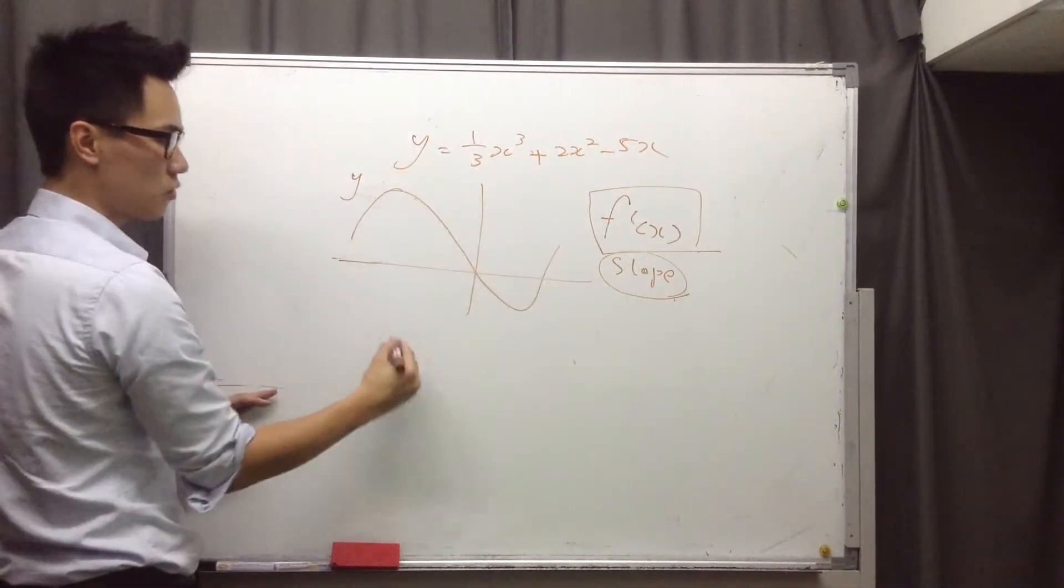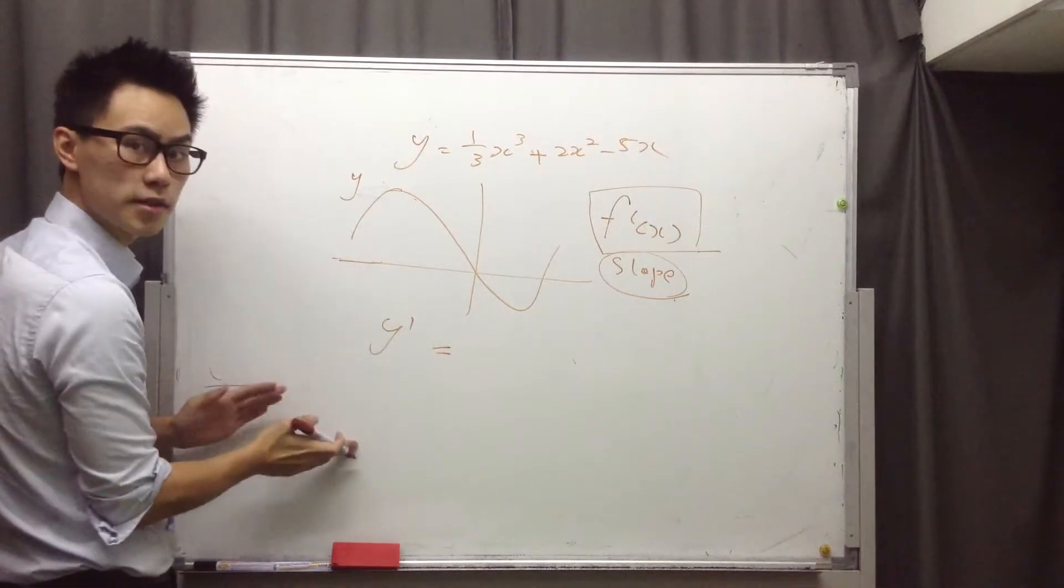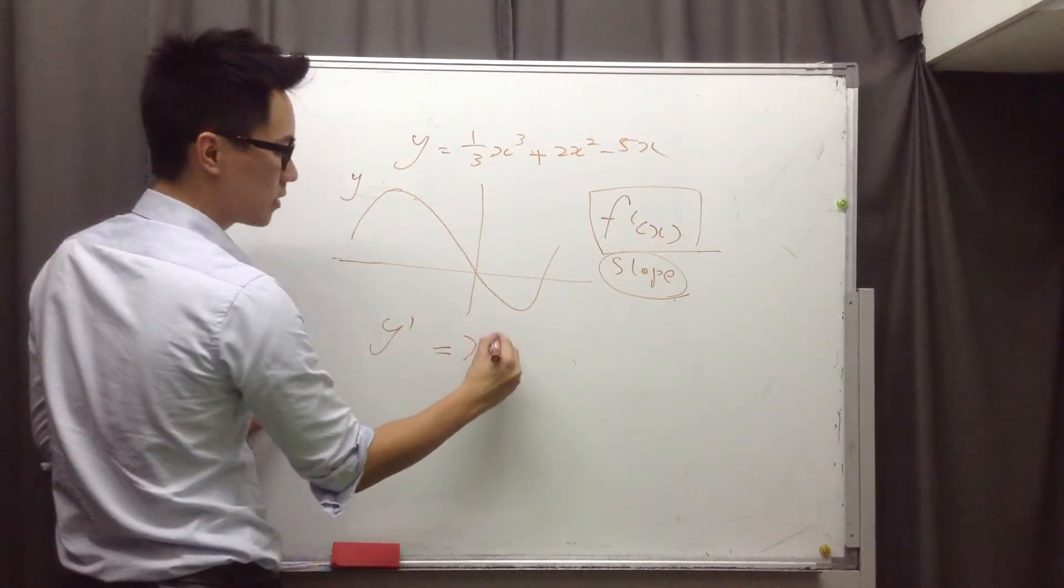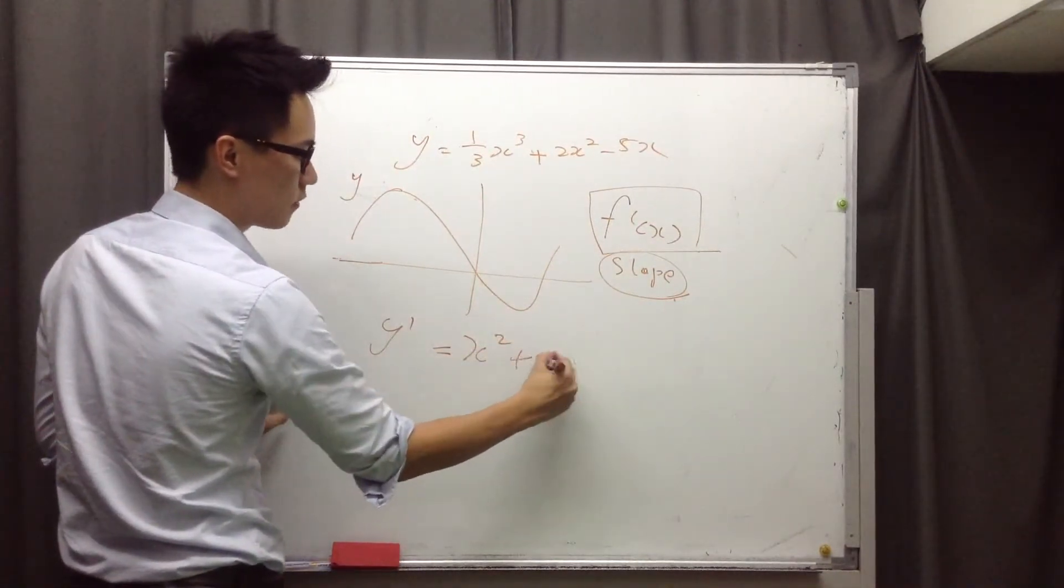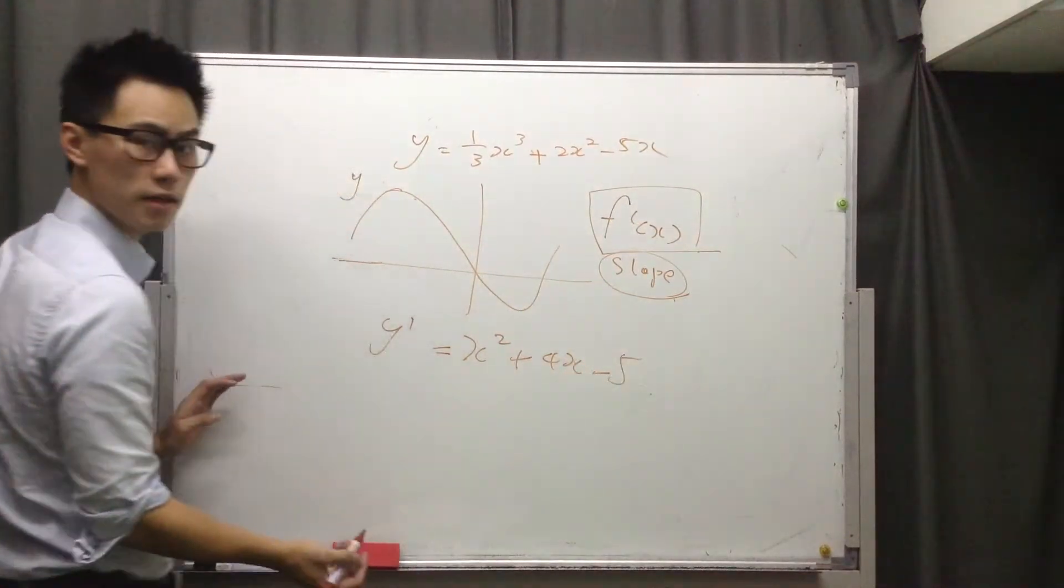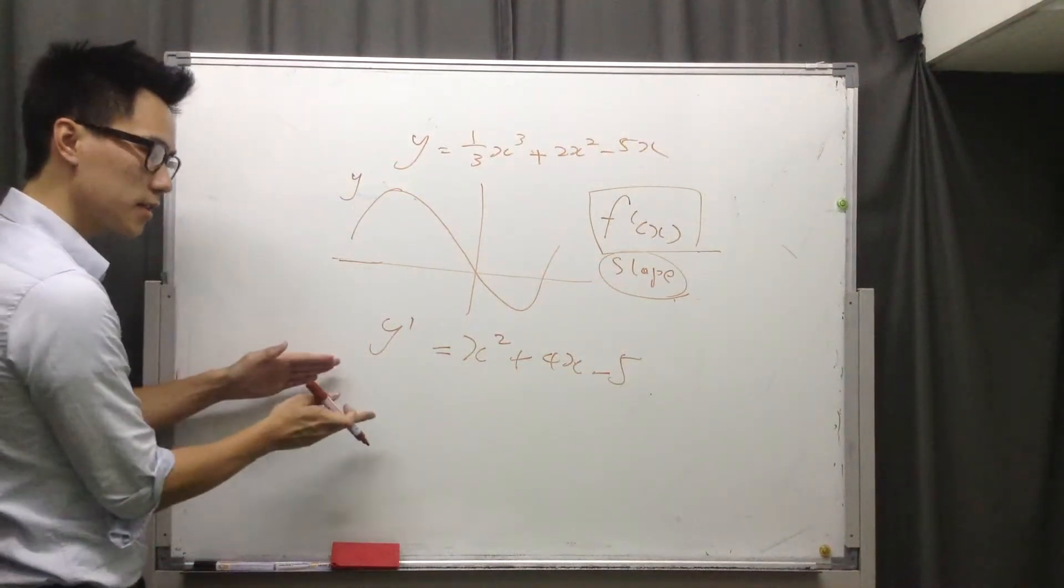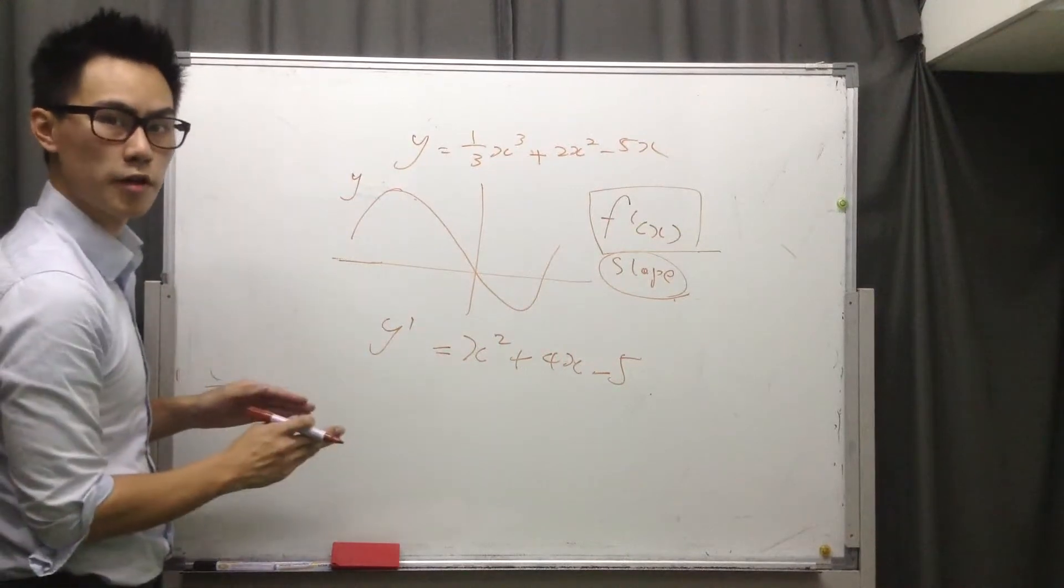So differentiation on this one, y dash would be, or you can say dy over dx. So it would be x squared plus 4x minus 5. But the next step is the key point to find the turning points.